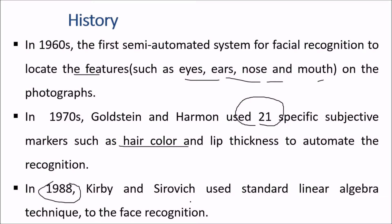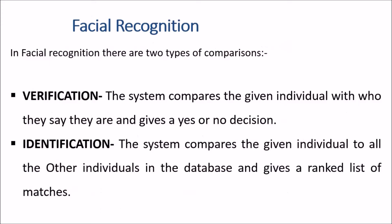There are two types of facial recognition comparisons: verification and identification. Verification is when the system compares a given individual with who they claim to be and gives a yes or no decision. Identification is when the system compares a given individual to all others in the database and gives a ranked list of matches.